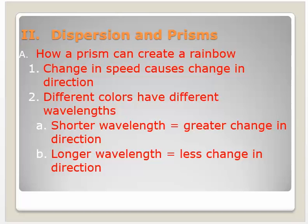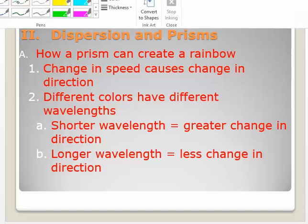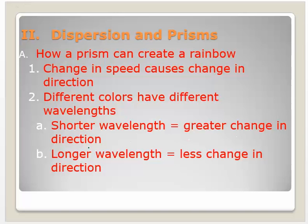Okay, let's talk about dispersion now. Dispersion in prisms. How a prism can create a rainbow? Well, this change in speed causes change in direction. Different colors have different wavelengths. The shorter the wavelength, the greater the change in direction. The longer the wavelength, the less change in direction.